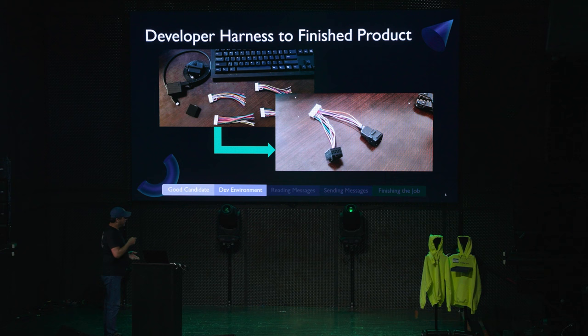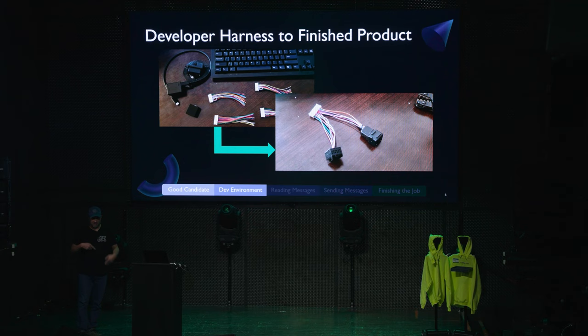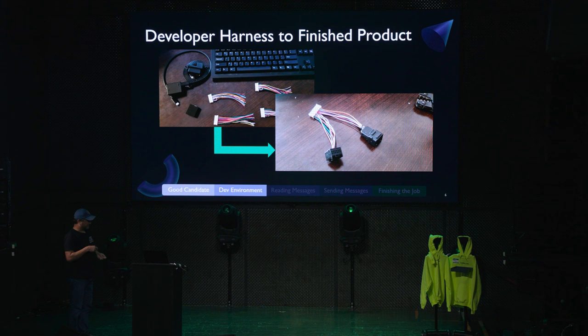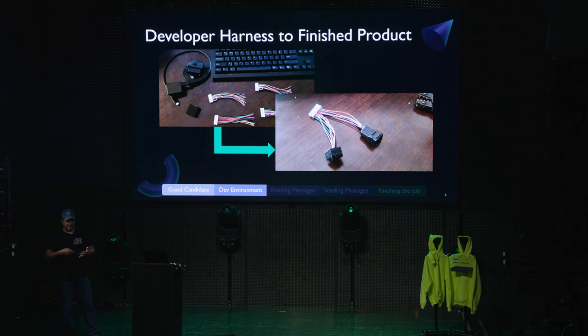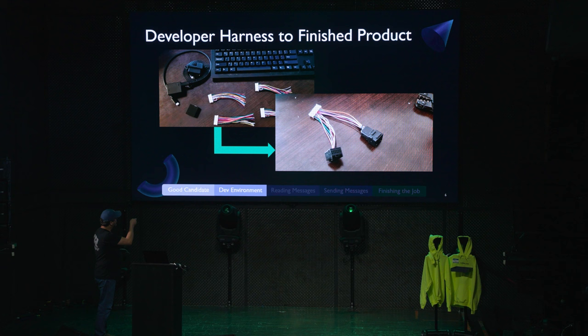So when you order from the comma store and you get a developer harness, that's what it'll look like. It looks like any other harness adapter they sell you, but there's no ends on it yet. You get to put the ends on it, because whatever connector shells and terminals it needs are going to be unique to your car. You can figure that out by looking at the connector on your car - there'll usually be a part number on it somewhere. In a pinch during development, you can make do with generic card edge pin headers.